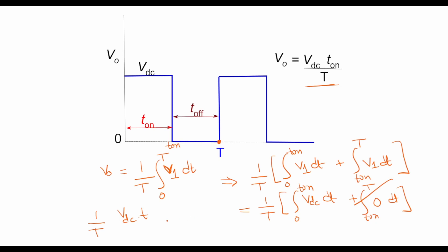Because integral of a constant is just that variable, and if I plug in the limit from 0 to T_on, I get the average value as Vdc times T_on over T, which is this value here. And this fraction T_on over T is called the duty cycle.